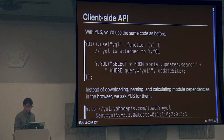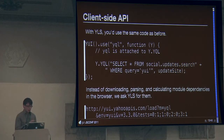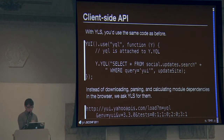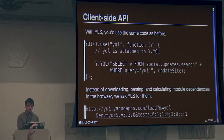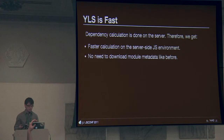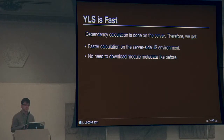A request looks like this: we give information about what module we want — say YQL — what we have on the page in the ENV parameter, including the YUI version. We also send feature test results, because we think feature testing is very important. We transfer the state of what tests have passed and failed on the browser over to the server. It's very fast because we're running this calculation on the server, which is always faster than running it on the client, especially on a phone. You don't need to download and parse module metadata like before.